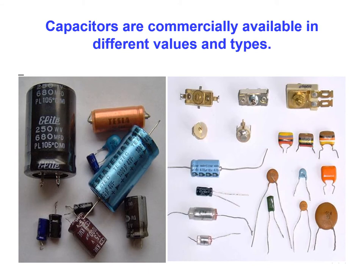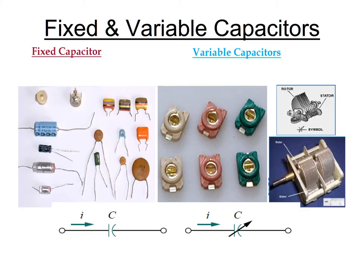Capacitors are commercially available in different values and different types. You can see in the figure, larger capacitors, smaller capacitors. These are called paper capacitors. They are also classified as whether it has fixed or variable capacitors. The symbol for variable capacitor is generated by an arrow.